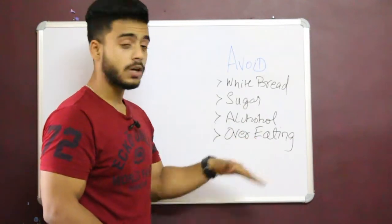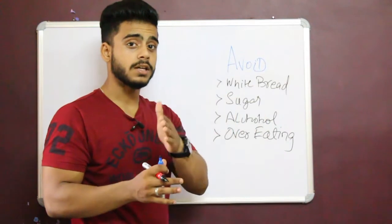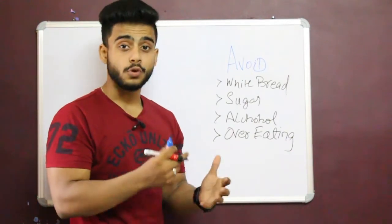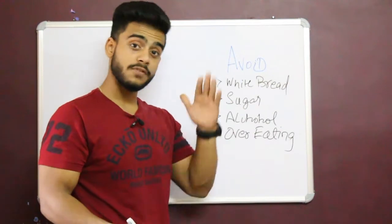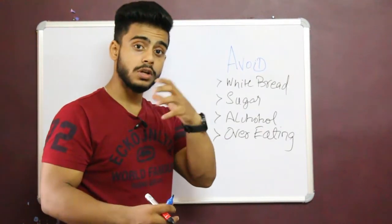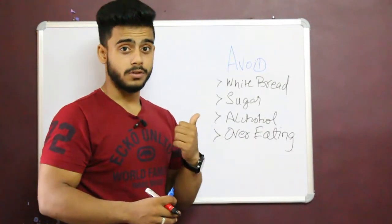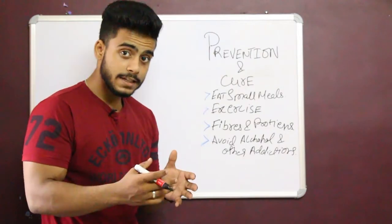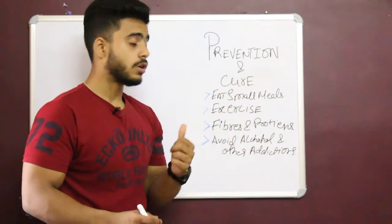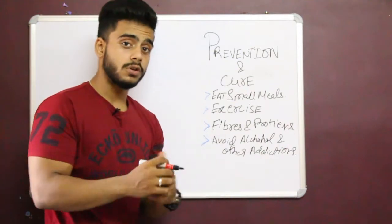After that, the point is overeating. When we eat a lot of food, you will not be able to absorb the food. Glucose will get more in your bloodstream which I have told you about, and you won't be able to use or utilize that glucose in your body. So the next point we are going to talk about is how you can prevent and cure.